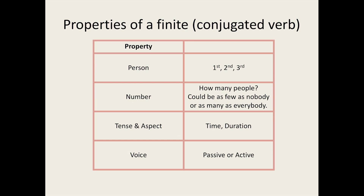We call the inflection of verbs conjugation. A conjugated verb is called a finite verb, and it has the following four properties. There is an additional fifth property — mood — which is a bit more complicated, and so I will not be covering it in this lesson.